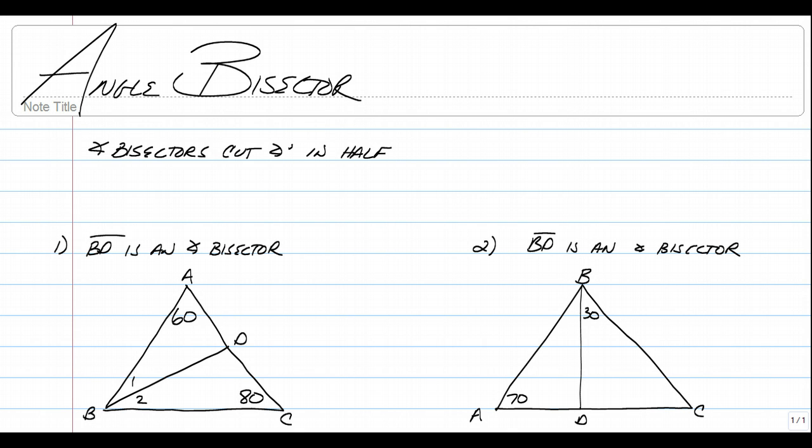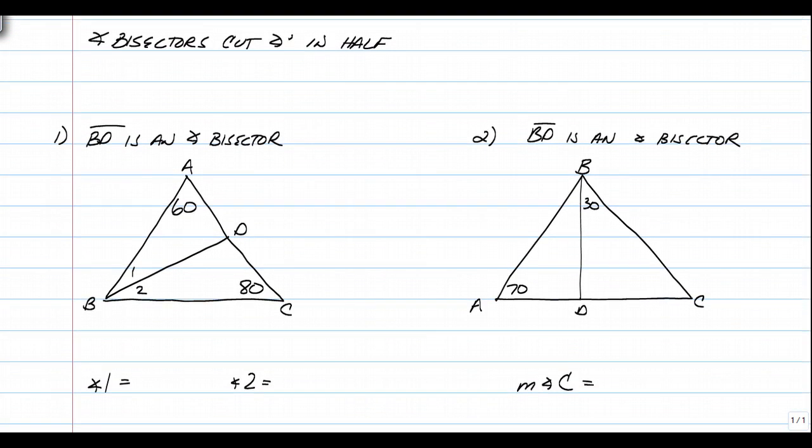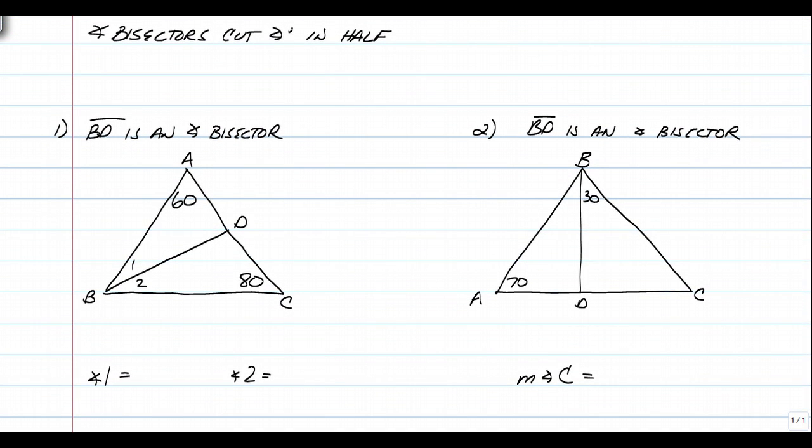BD is an angle bisector in the first one. So what that means is it's cutting angle ABC in half, and we're going to find the measure of angle 1 and 2. So BD is a segment that cuts angle B in half, meaning angle 1 will be congruent to angle 2, because that's what an angle bisector does.